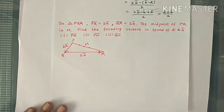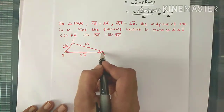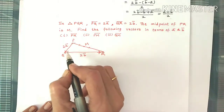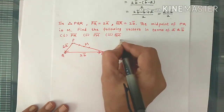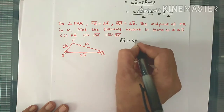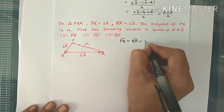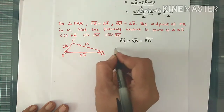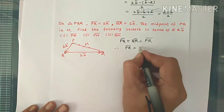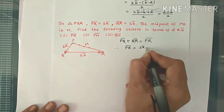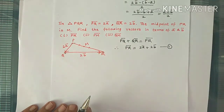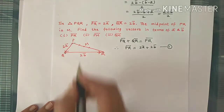First, PR bar is asked. PQ bar plus QR bar equals PR bar, as we have direction from P to Q and direction from Q to R. By triangle law of addition, PQ bar plus QR bar equals PR bar. Therefore PR bar equals PQ bar plus QR bar, which is 2A bar plus 2B bar. So PR bar is 2A bar plus 2B bar.